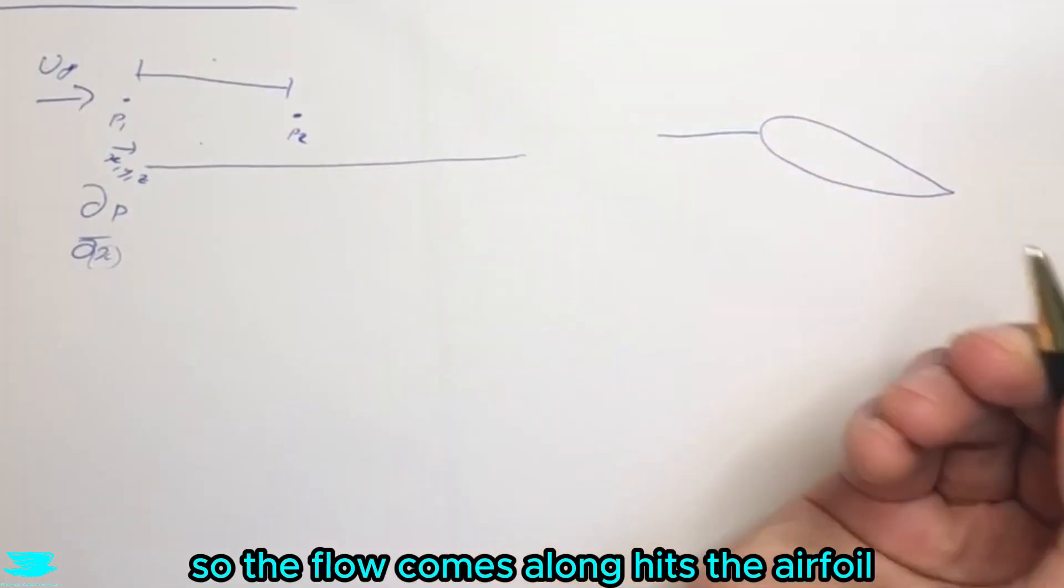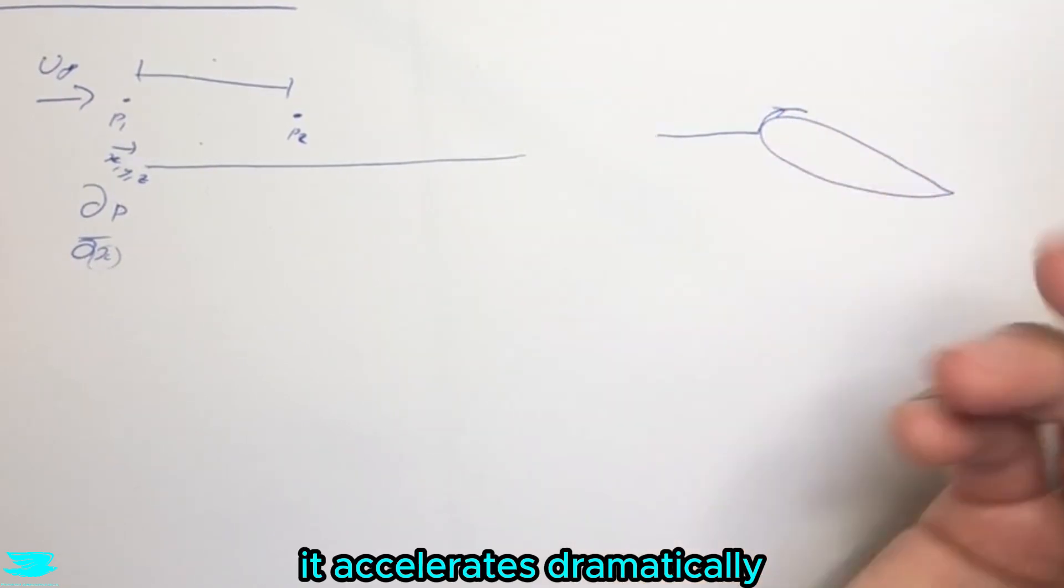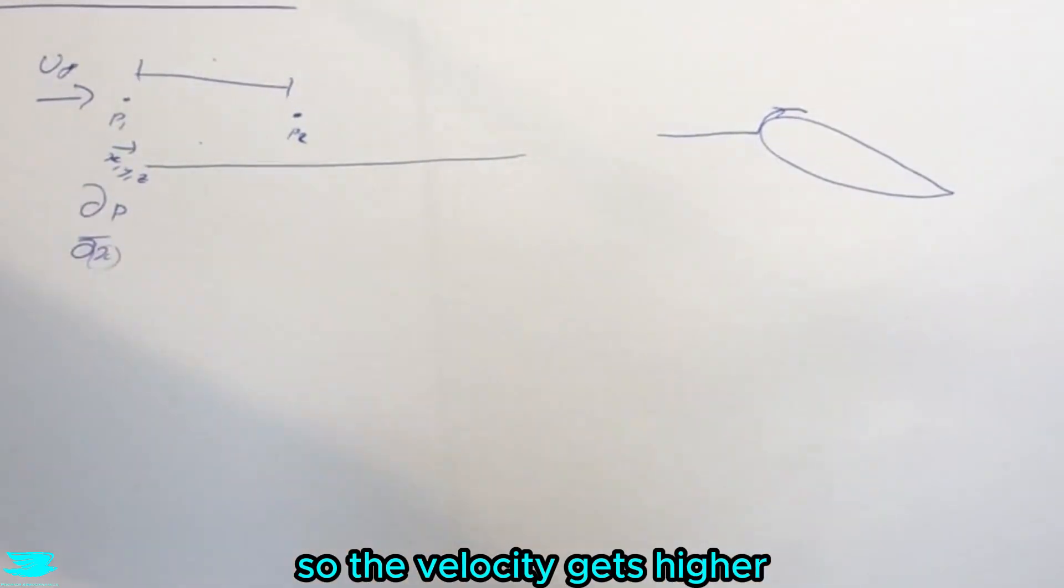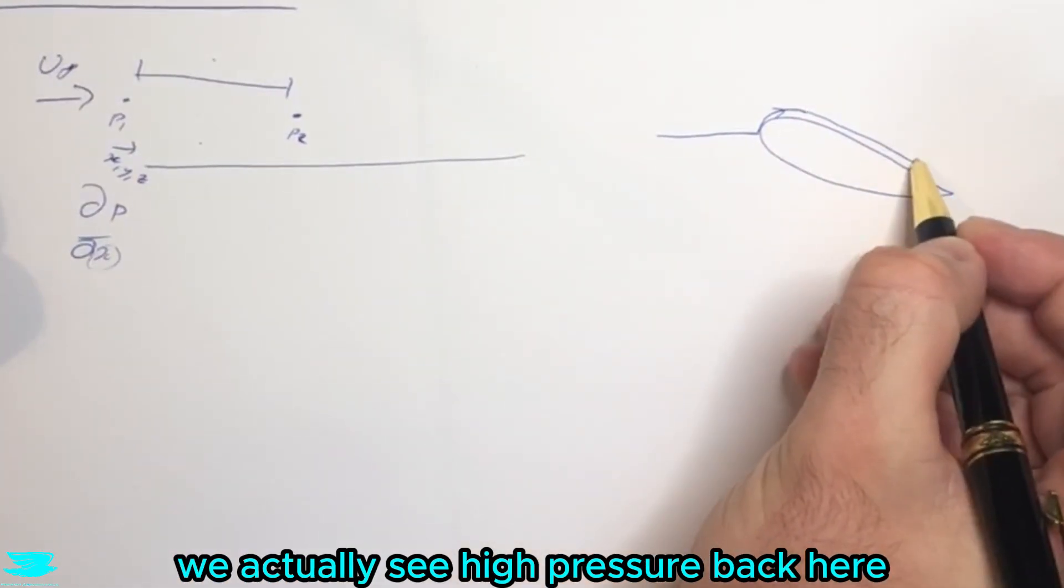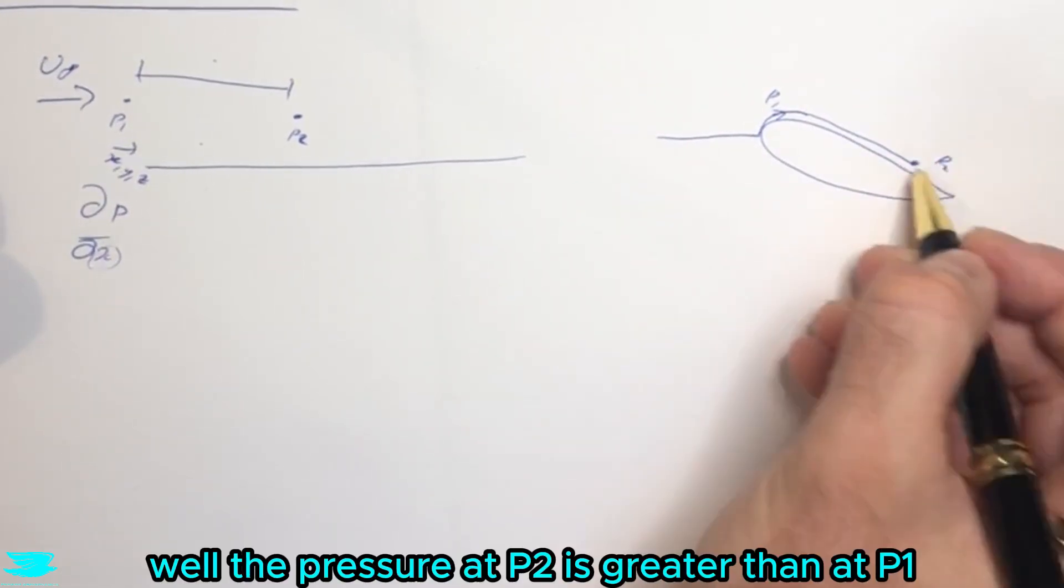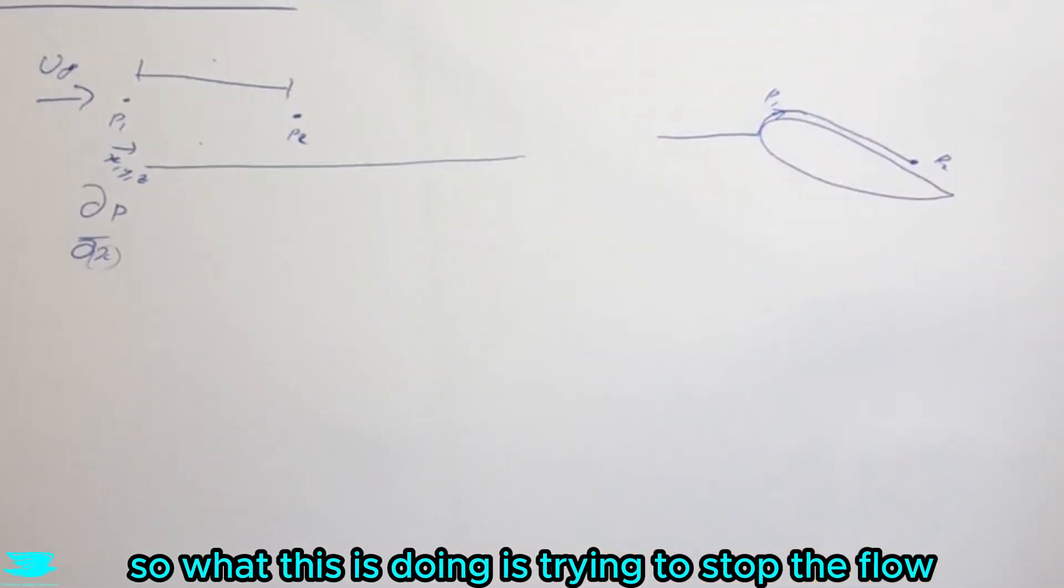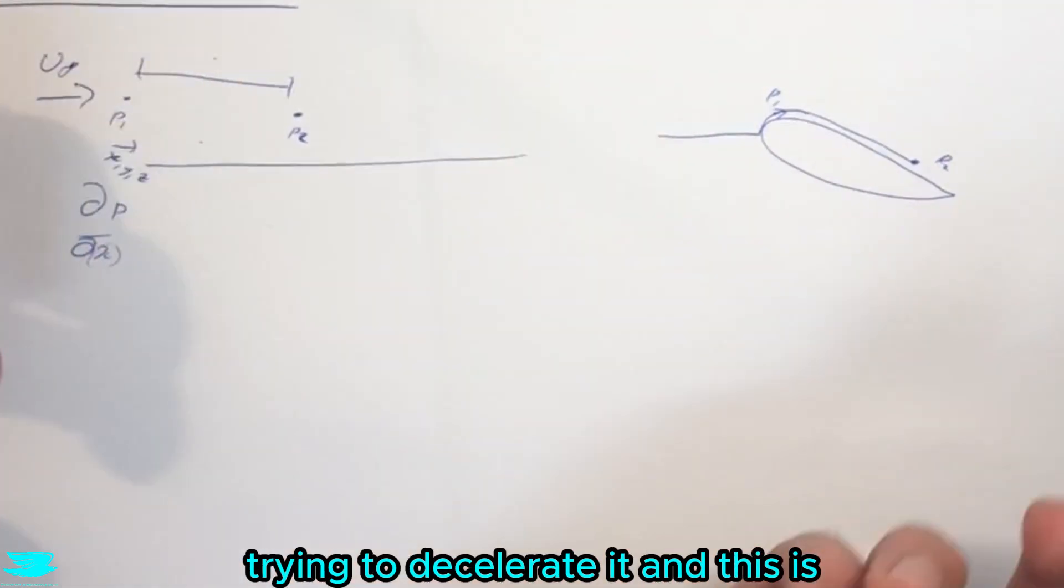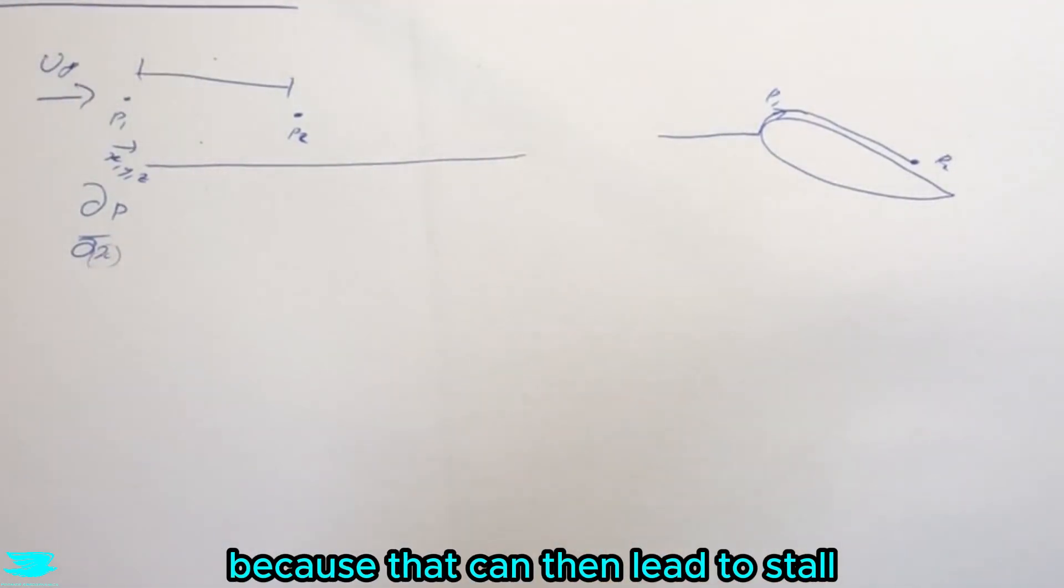The flow comes along, hits the airfoil, then comes along here. As it goes along here it accelerates dramatically, so the velocity gets higher and the pressure drops. But as it comes along here we actually see high pressure back here. So if p1 is here and p2 is here, the pressure at p2 is greater than at p1. This is trying to stop the flow, trying to decelerate it, and this is usually very important when it comes to airfoils because that can then lead to stall.